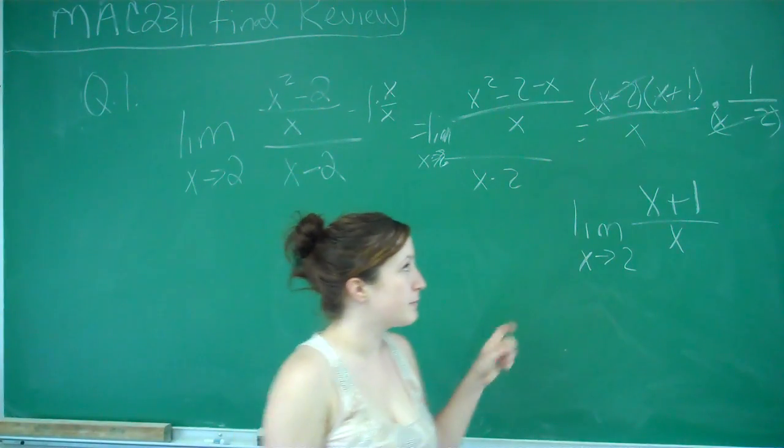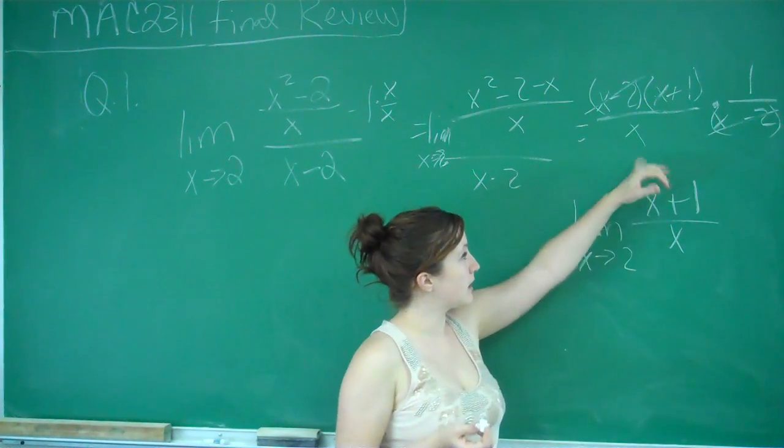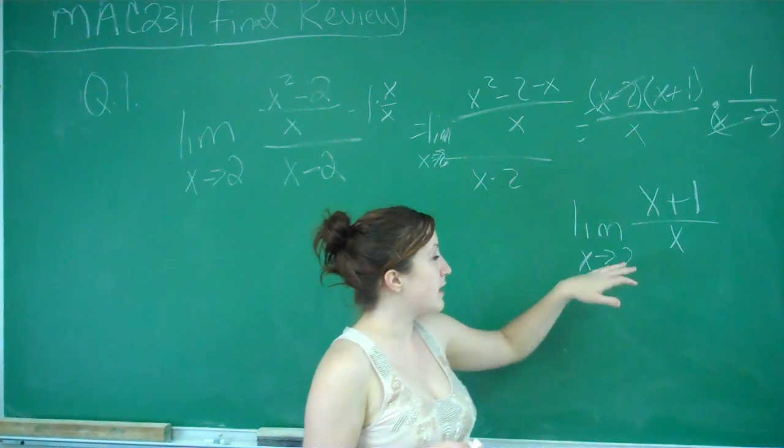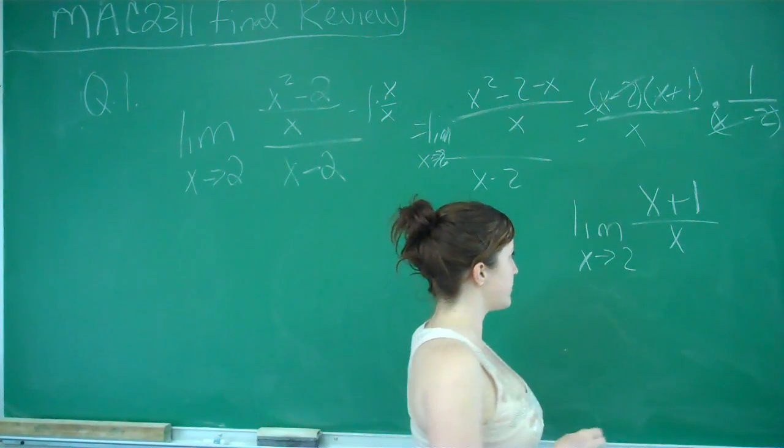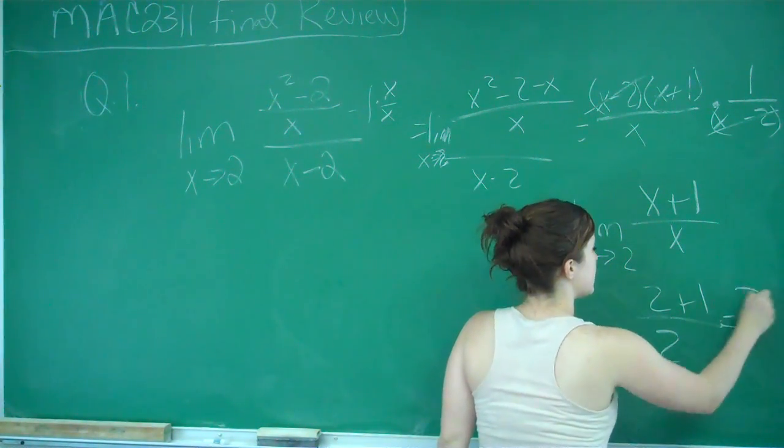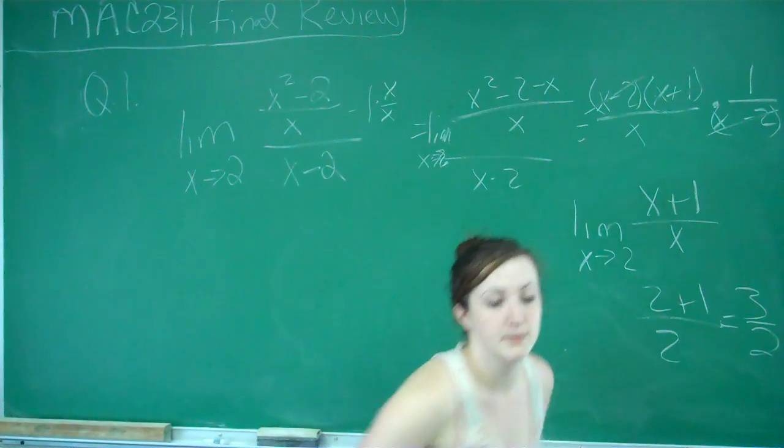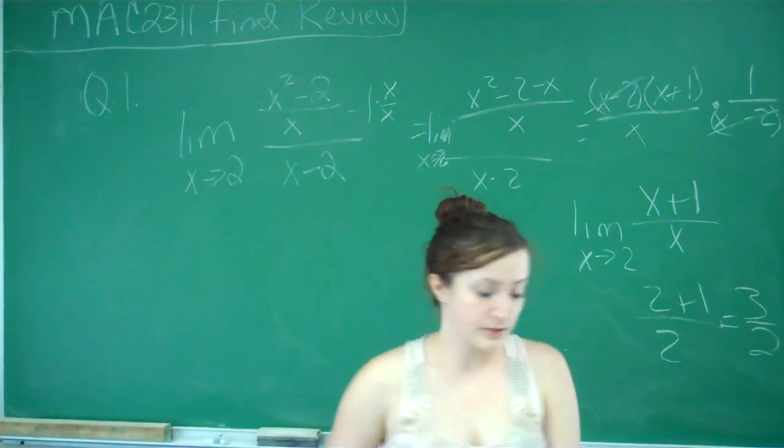And we do this so we can remove that 2 that's making it impossible for us to plug it in. So now that we've canceled that out, we can look and see where it's approaching by plugging 2 in. So that gives me 2 plus 1 over 2, which is 3 halves. And that is answer D.